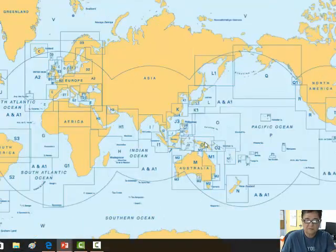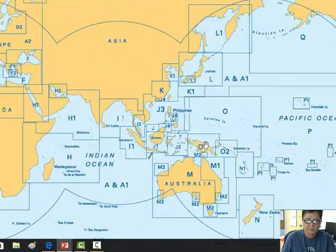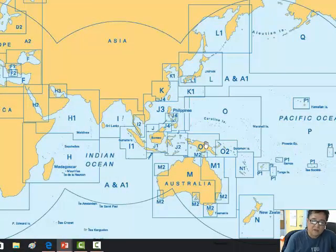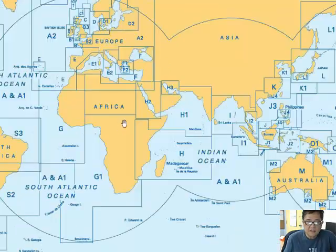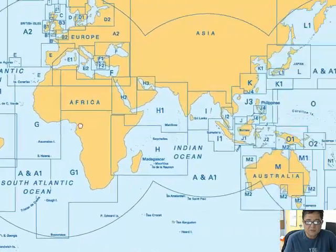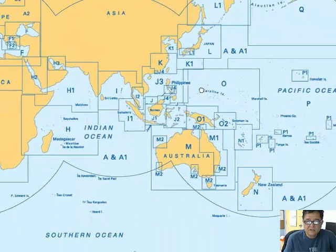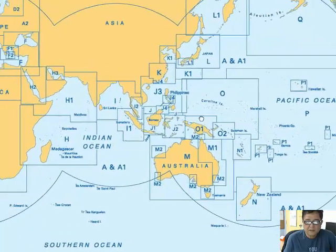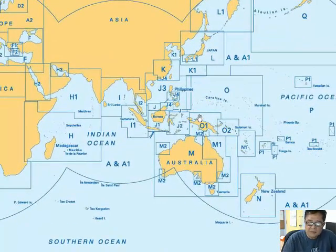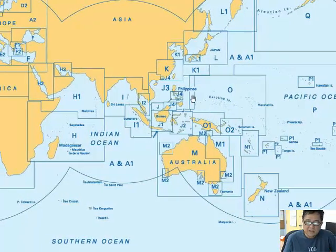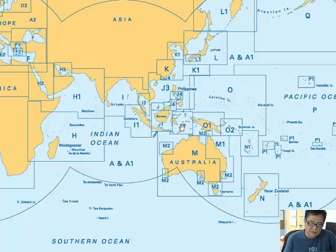In this picture it shows the blocks and indexes. For example, if you are in the Philippines, as you can see there is a number J4, J3, J2. Particularly, G4 is Cebu. If you are planning to have a route from Cebu to Manila, you can use J4.